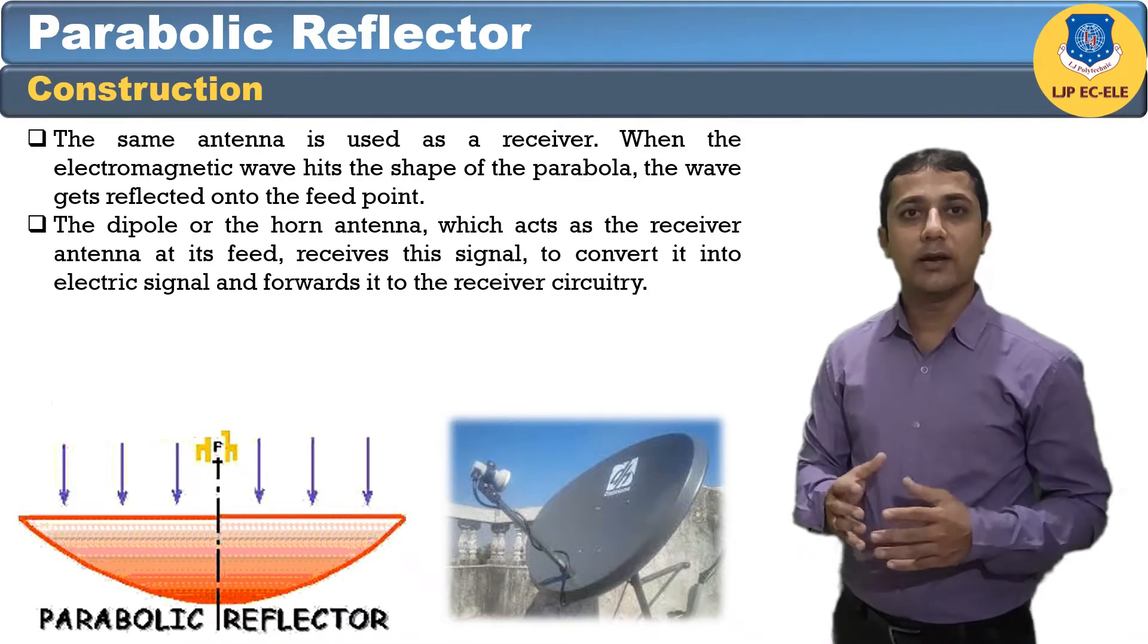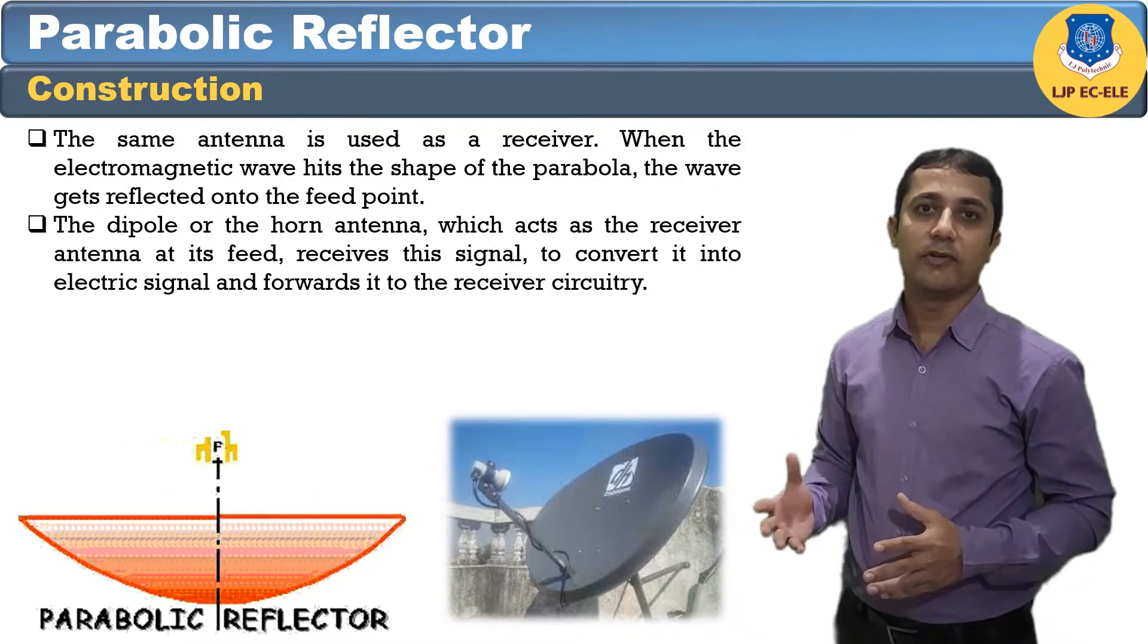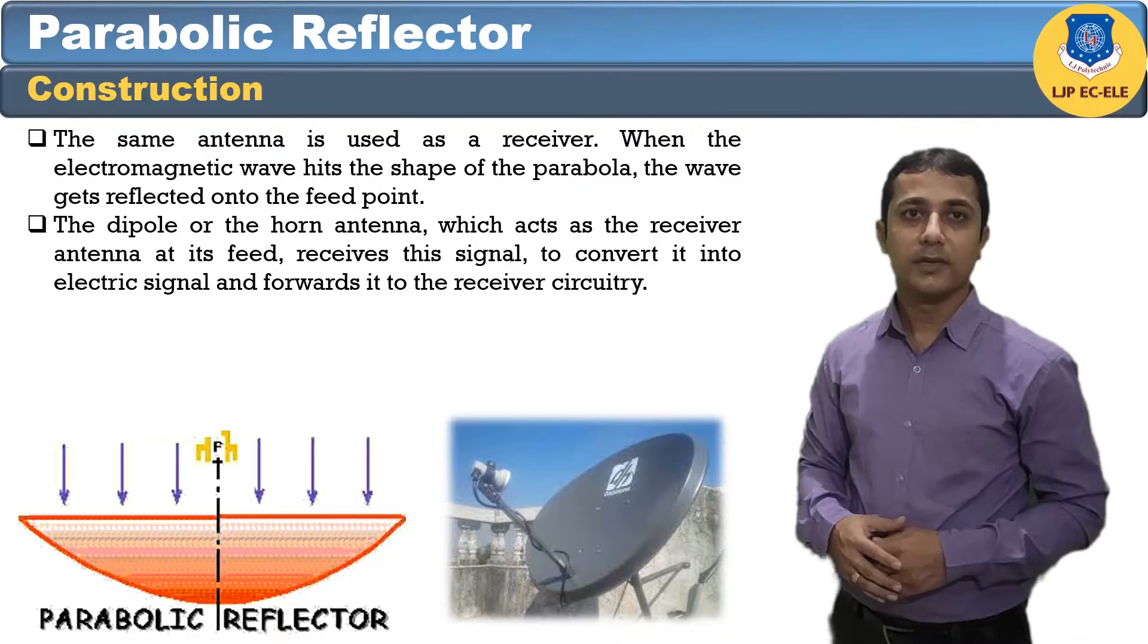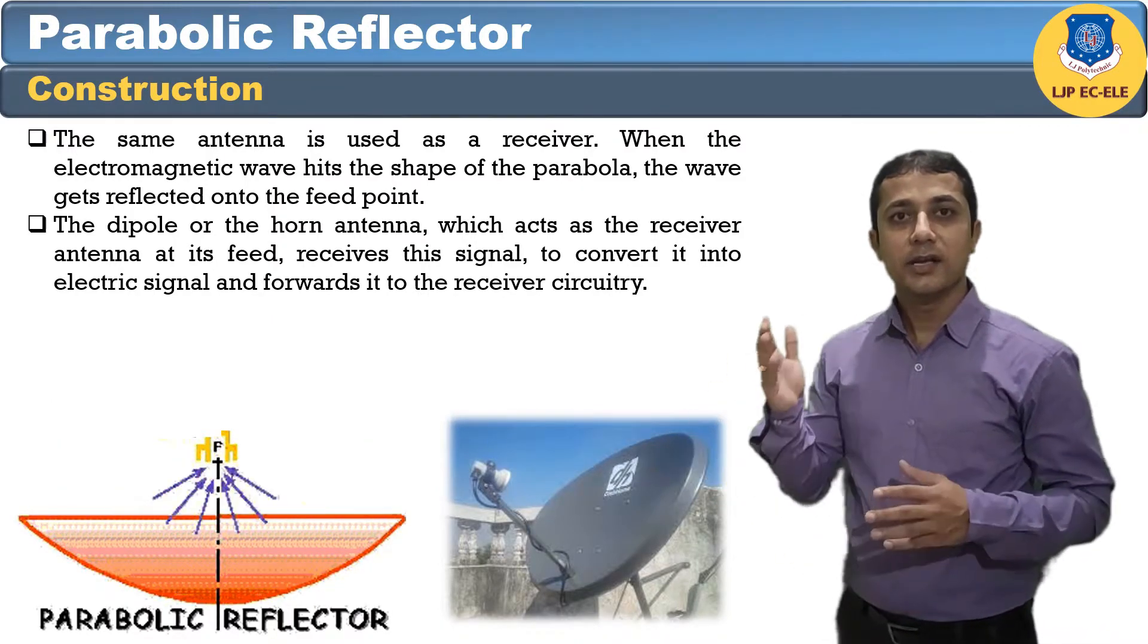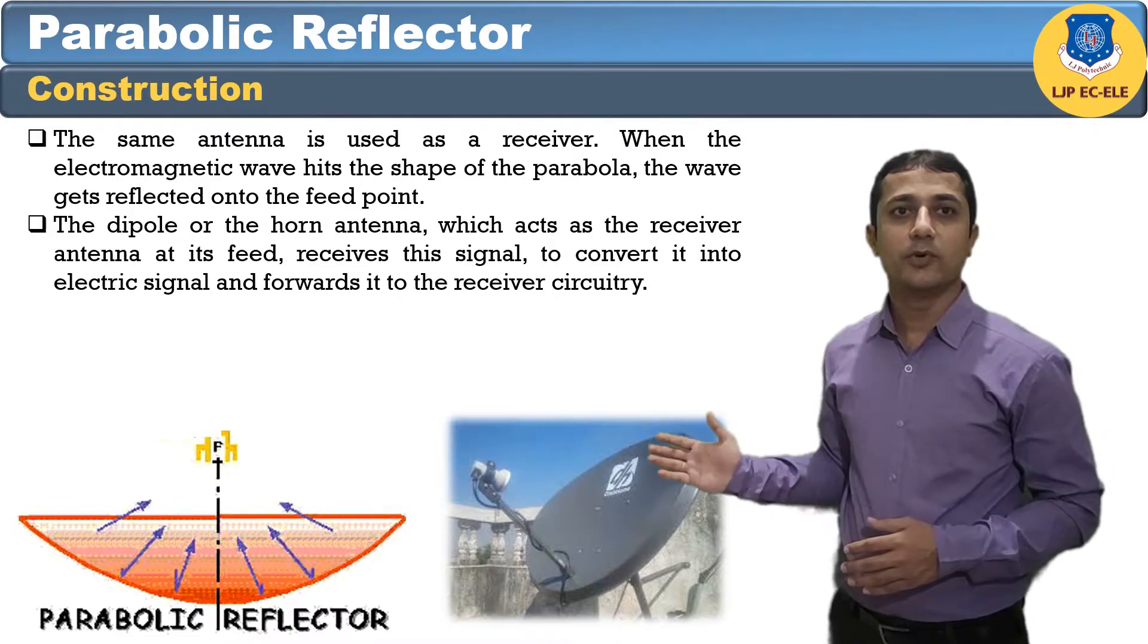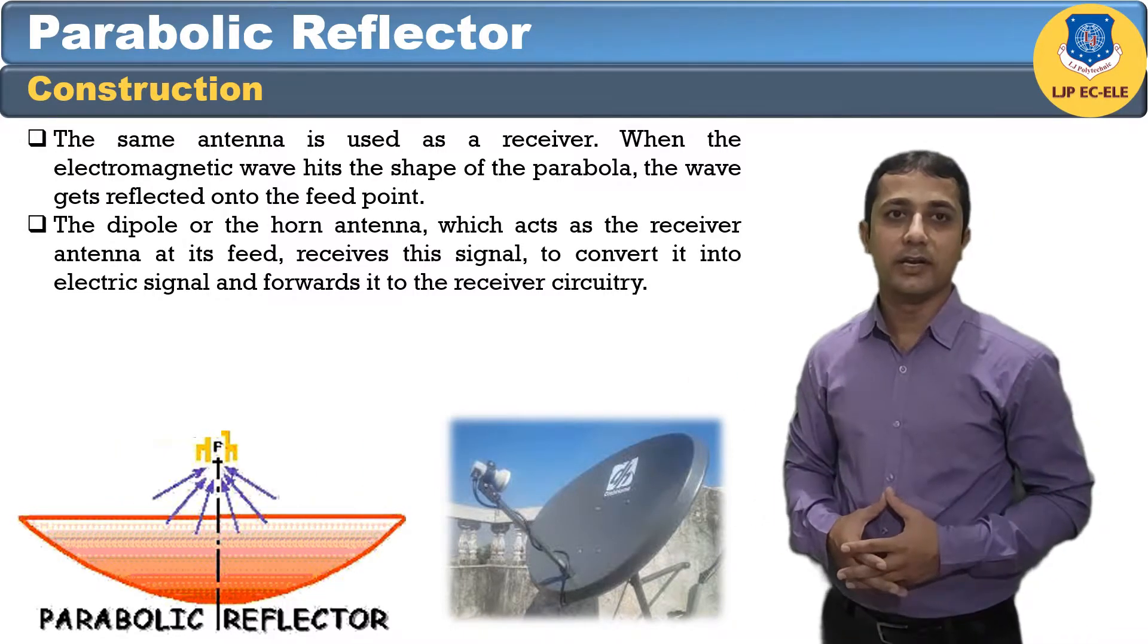The gain of the paraboloidal is a function of aperture ratio D by lambda. The effective radiated power ERP of an antenna is the multiplication of the input power fed to the antenna and its power gain.